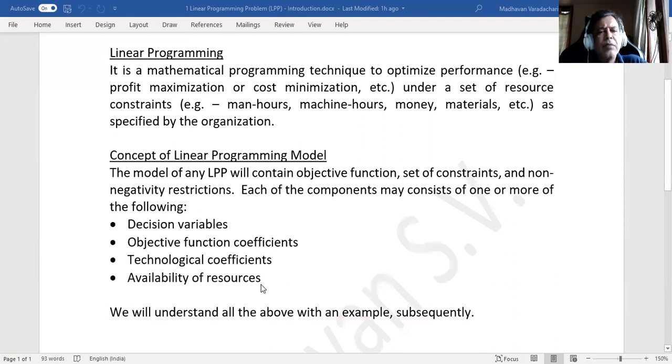We will understand all these components, each of the nomenclatures. For example, what do we mean by objective function? What do we mean by set of constraints? What do we mean by non-negativity restrictions? Decision variables means what? Objective function coefficients means what? Technological coefficients or technological coefficient matrix, what is that? Availability of resources and then requirement of resources or required resources versus availability.